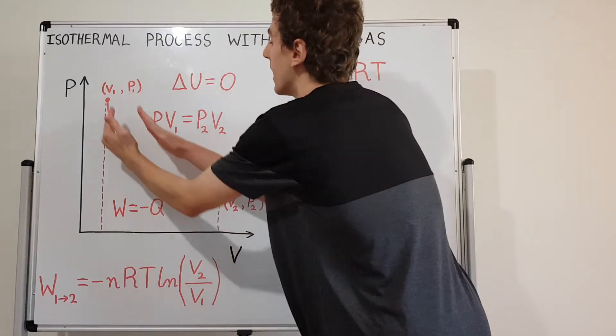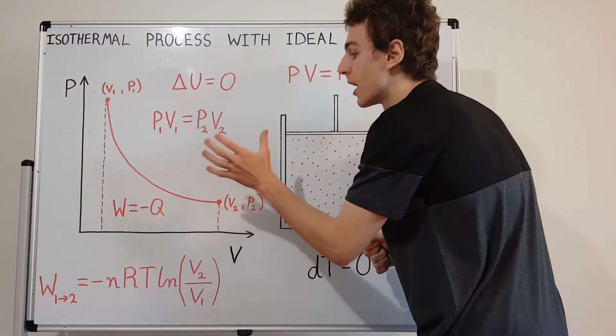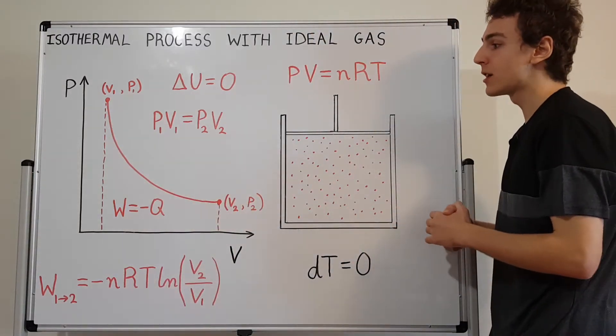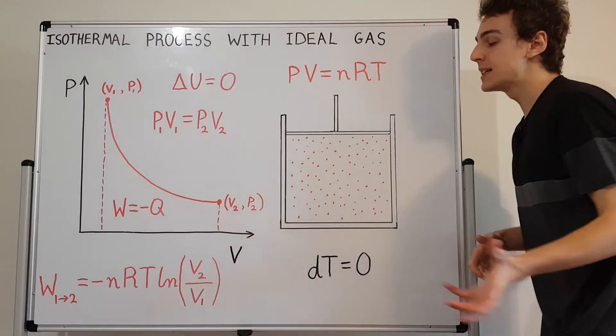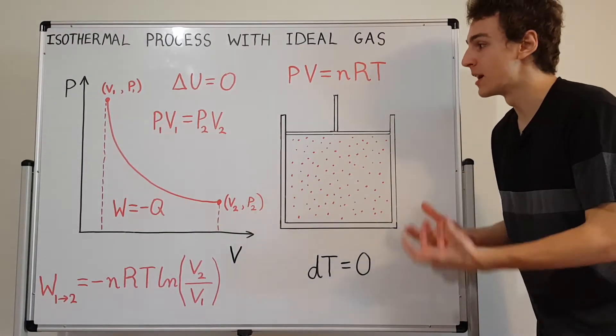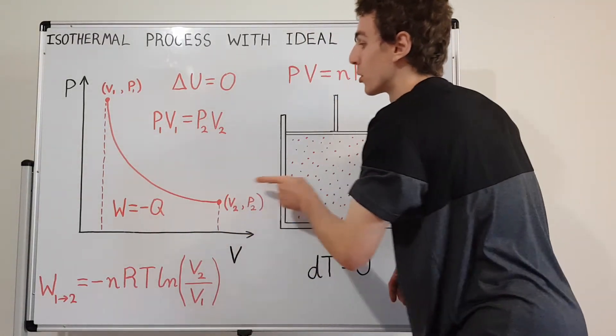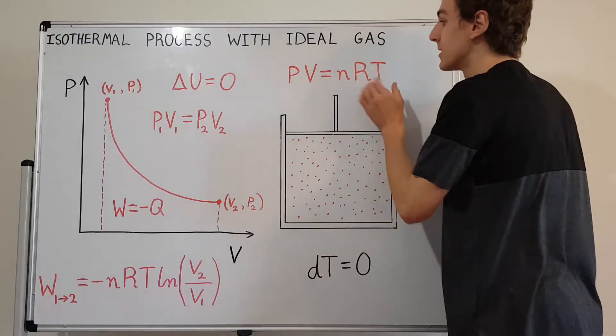What does a curve look like that satisfies the isothermal condition? Well it's actually a rectangular hyperbola, and a rectangular hyperbola is exactly the same as the curve of 1 on x. So if you're familiar with some of the basic functions, 1 on x has that rectangular hyperbola shape. And that's actually what we get from this.